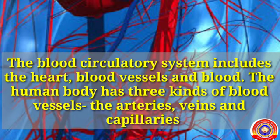The blood circulatory system includes the heart, blood vessels, and blood. The human body has three kinds of blood vessels: the arteries, veins, and the capillaries.